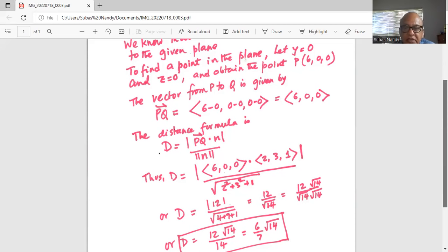Now you want to rationalize the denominator, so you multiply by square root of 14, another square root of 14 in the denominator and square root of 14 in the numerator. So that square root of 14 divided by square root of 14 is 1.